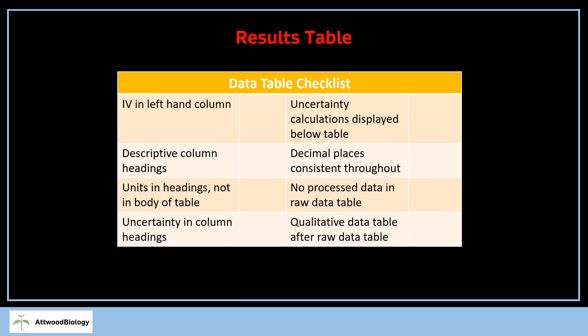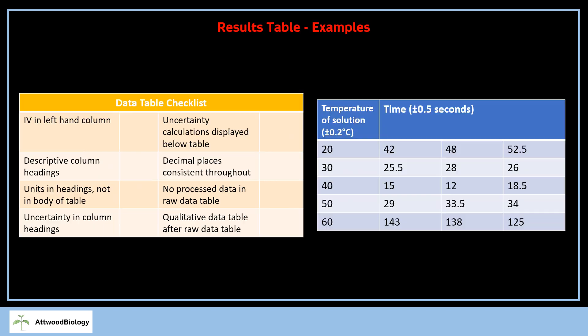First section is the results table. This is the data table checklist—all the things I usually have to pick out and annotate when marking IAs. Students miss these basic things again and again. Your first results table will be your raw data table, so no processed data, only raw data. This is your checklist. We're going to look at a table now and think about which parts of that checklist we've got and what's missing.